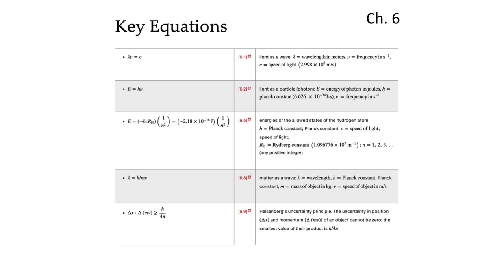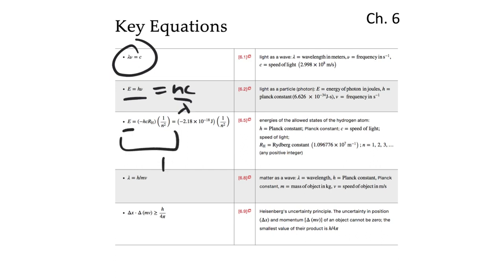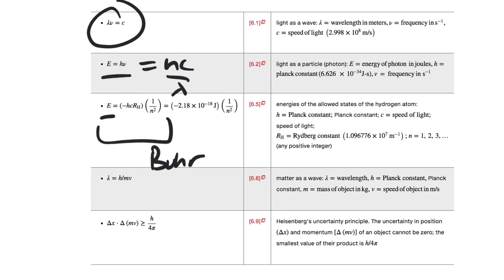For chapter six, we do get a few equations on the test. You have the speed of light equation: c equals lambda times nu, which lets us calculate wavelength and frequency. We also have E equals h-nu, the energy of a photon, which can also be written as hc over lambda. Then there's the energy as a function of n for the hydrogen atom from the Bohr model: minus hc times the Rydberg constant equals minus 2.18 times 10 to the minus 18 joules times 1 over n squared. The Bohr model had the electron spinning in fixed orbits around the nucleus, with n equals 1, 2, 3 increasing the orbit size.